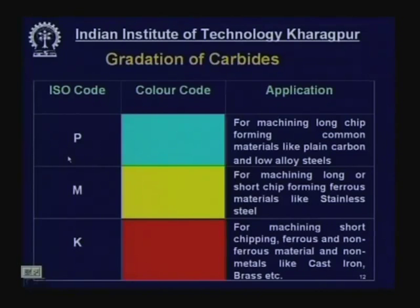Within P grade, further grading uses numbers like P5, P10, P20, P30, P40 — smaller number means harder, larger number means tougher. With increasing toughness, the number increases. Similarly, M and K are graded K5, K10, K20, K30, K40 — K5 and K10 are harder while K40 is very tough.